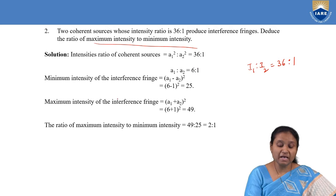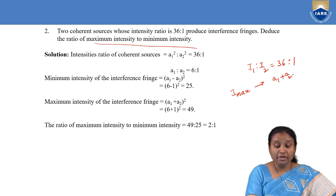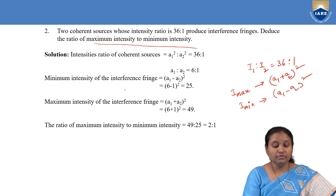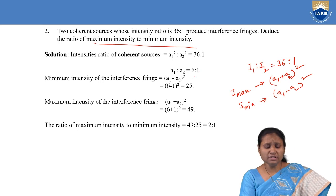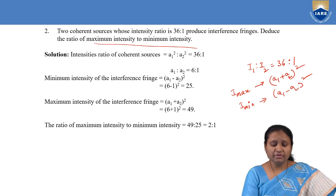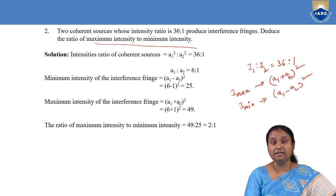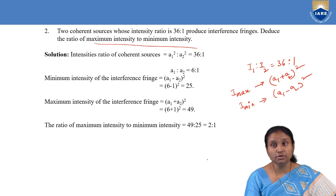Maximum intensity is the square of the sum of amplitudes of individual waves, and minimum intensity is the square of the difference of amplitudes. So minimum intensity is (A1 − A2) whole square = (6 − 1) whole square = 25, and maximum intensity is (A1 + A2) whole square = (6 + 1) whole square = 49. The ratio of maximum to minimum intensity is 49 to 25, which is approximately equal to 2 to 1.